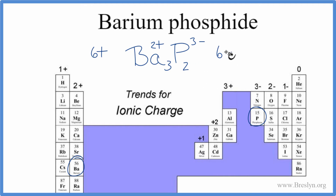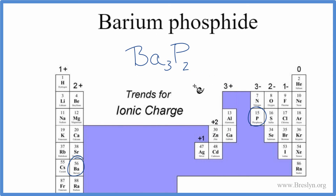Let's clean it up and get rid of the charges. And there you have it — the formula for barium phosphide: Ba₃P₂. This is Dr. B, and thanks for watching.